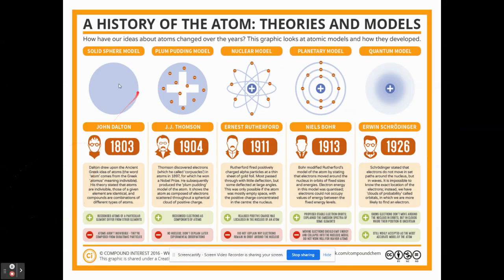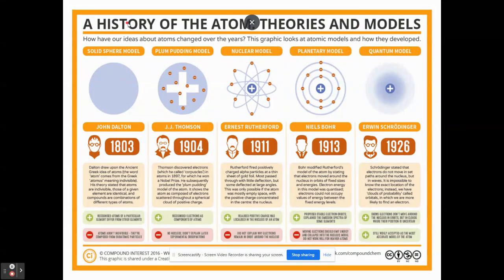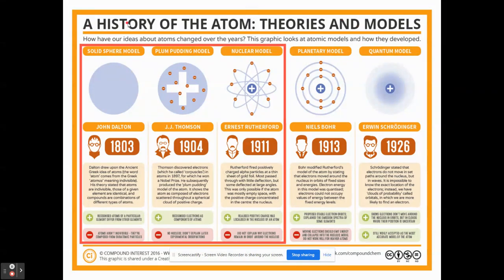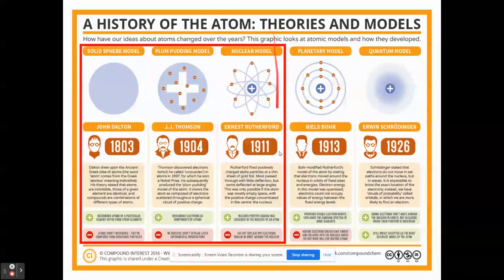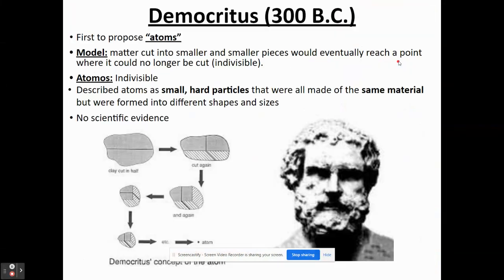This is the main timeline we'll be looking at. We'll be taking a look at John Dalton all the way to Schrödinger's model, as well as some earlier ideas from Aristotle and Democritus. This first chunk covers the early atomic models, and the next presentation will take a look at the last two models.